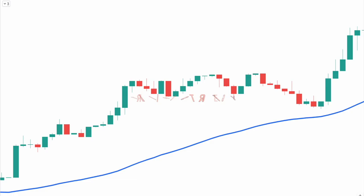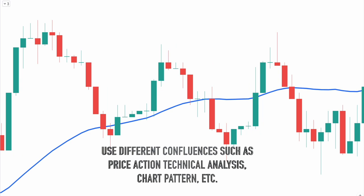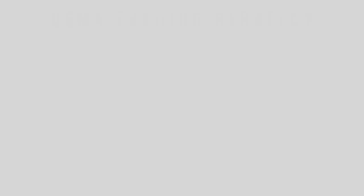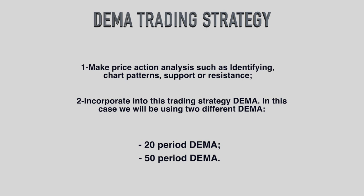Now we will build a trading strategy incorporating the Double Exponential Moving Average as a core component. To make it more powerful, combine it with confluences such as price action technical analysis and chart patterns. This DEMA trading strategy includes two technical conditions: first, a simple price action analysis such as identifying chart patterns and support or resistance; second, the DEMA, using two different periods — a shorter 20-period DEMA and a longer 50-period DEMA.